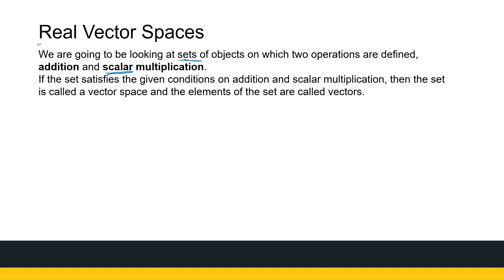We're talking about real vector spaces, so these scalars we're looking at are real numbers. Now if this set satisfies given conditions on the addition and the scalar multiplication, then the set is called a vector space, and the elements of the set are called vectors.